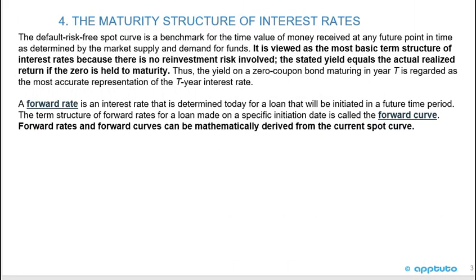The default risk-free spot curve is a benchmark for the time value of money received at any future point in time, as determined by the market supply and demand for funds. It is viewed as the most basic term structure of interest rates because there is no reinvestment risk involved. The stated yield equals the actual realized return if the zero is held to maturity. Thus, the yield on a zero-coupon bond maturing in year T is regarded as the most accurate representation of the T-year interest rate. A forward rate is an interest rate determined today for a loan that will be initiated in a future time period. The term structure of forward rates for a loan made on a specific initiation date is called the forward curve, and forward rates and forward curves can be mathematically derived from the current spot curve.